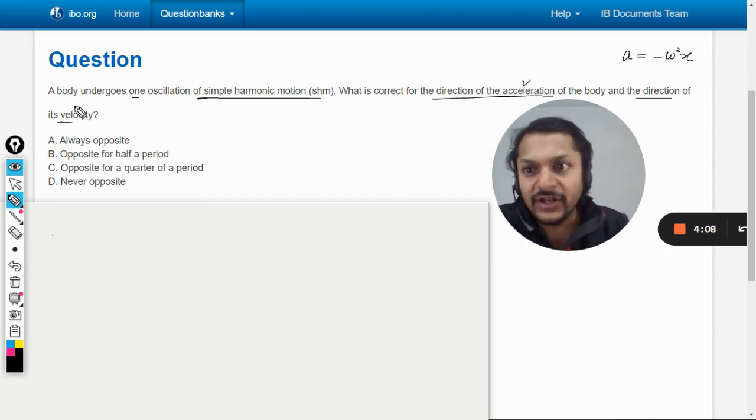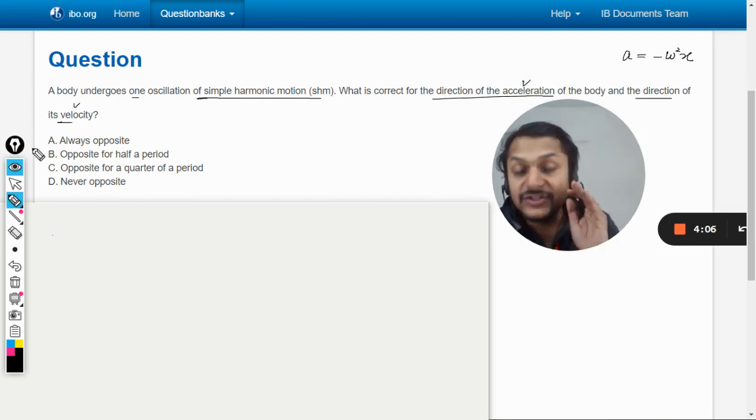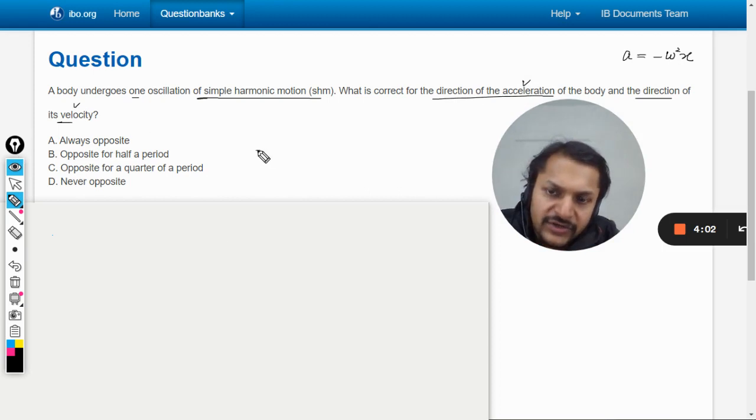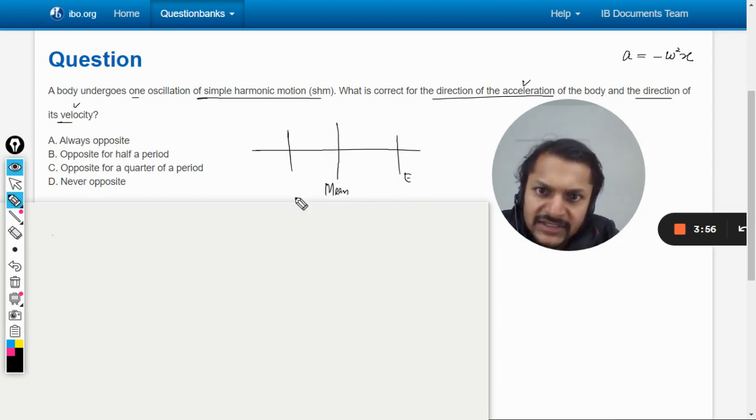But in this question they're talking about the acceleration and velocity, and this is not that straightforward. Let us see. We have to create a diagram here. Now let's say this is the mean position, and this is the right extreme, and this is the left extreme that the body is moving through.